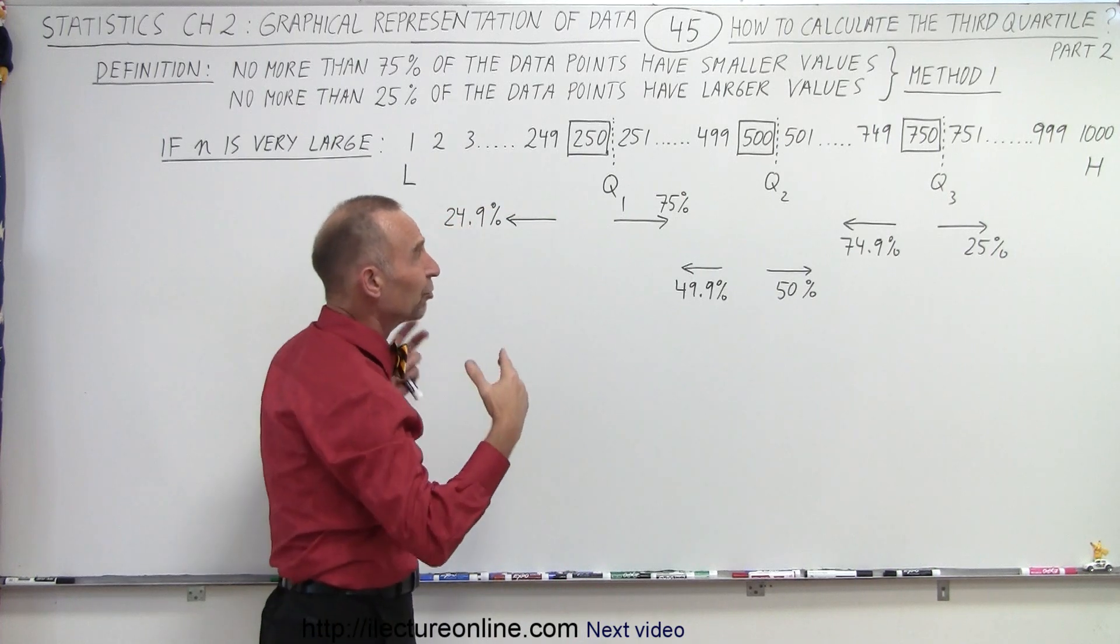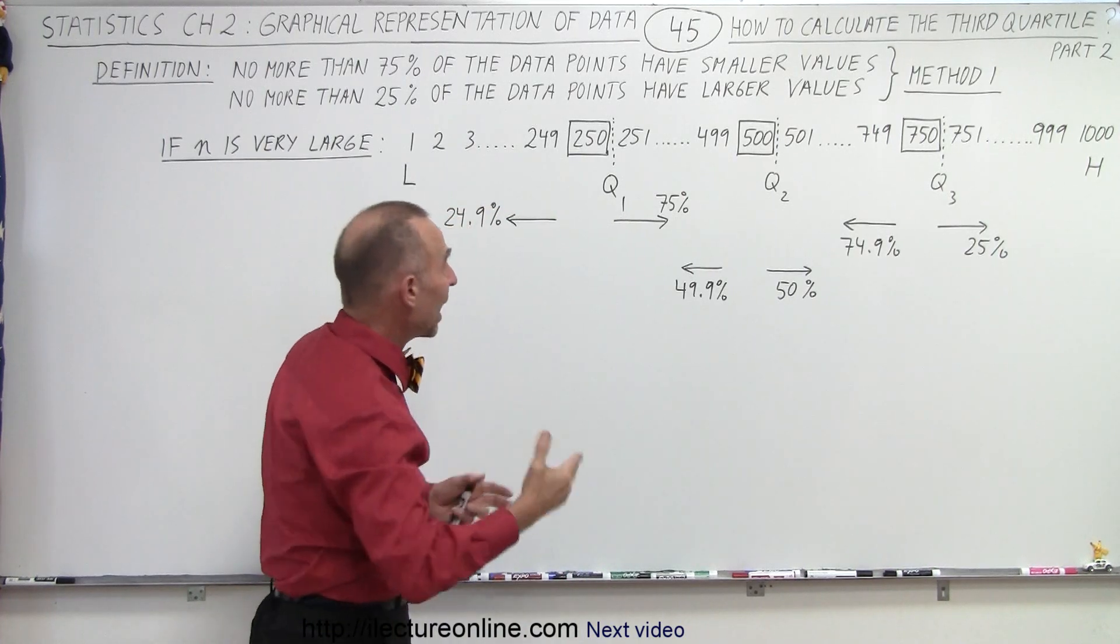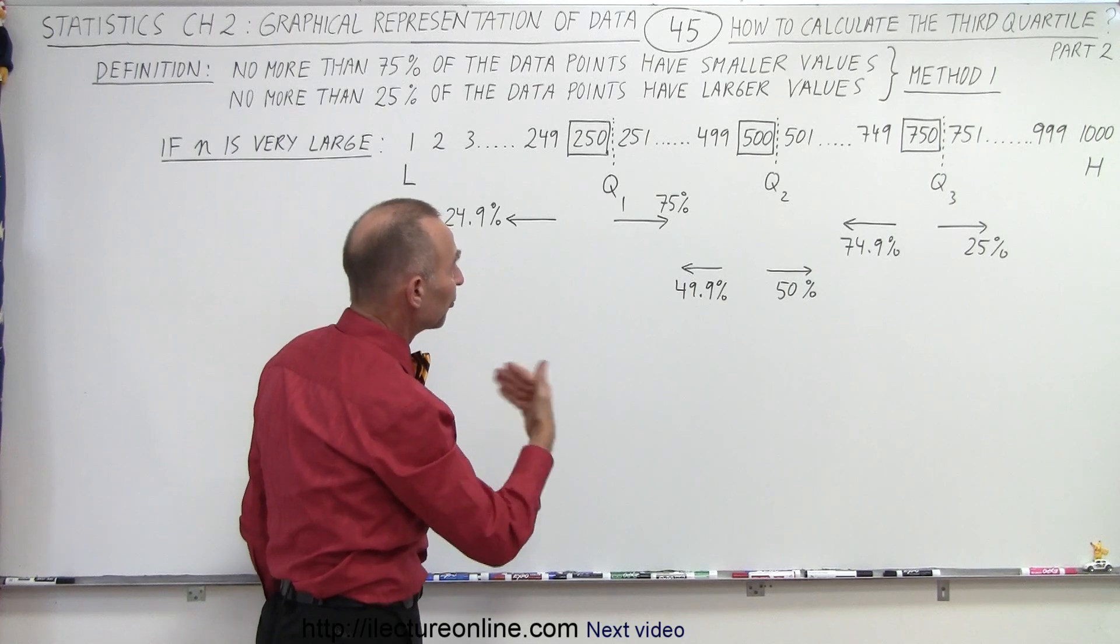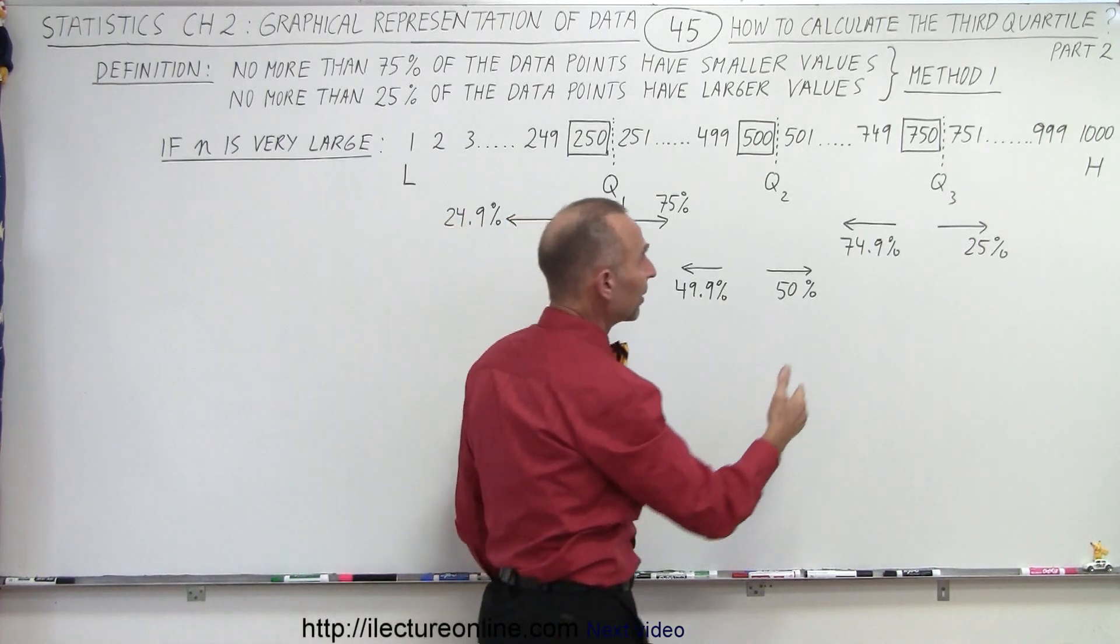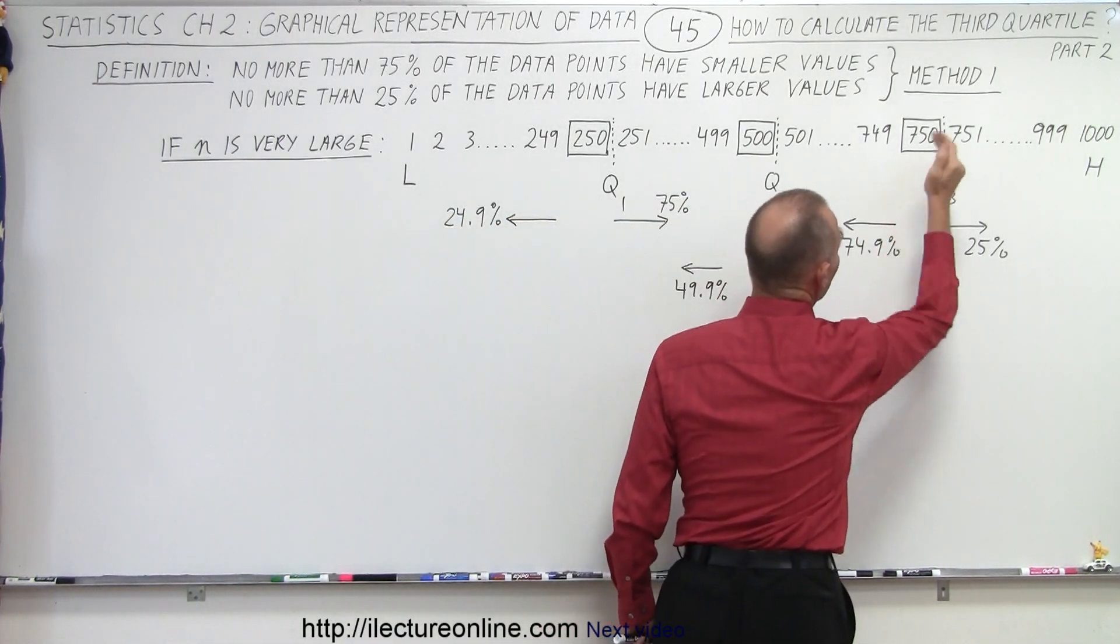But if there's a large number like that, you might as well just grab one of the data points and call it the first, second, or third quartile. Typically we take the one right before the boundary.